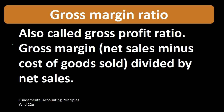The gross margin ratio can also be described as the gross profit ratio. It's a calculation — a ratio — where net sales minus cost of goods sold gives us the gross margin, also called gross profit, and we divide that by net sales. So we're taking the gross margin number and dividing it by net sales.